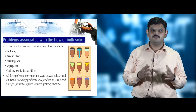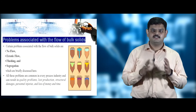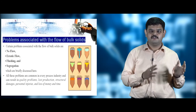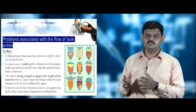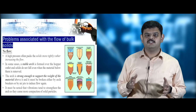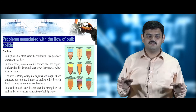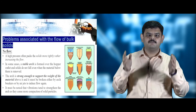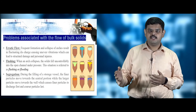Next we will see the different types of flow problems associated with flow patterns. These include no flow, erratic flow, flushing, and segregated flow. Whenever these problems occur, there are safety and quality control issues. In the no-flow condition, different arches form inside the container. These arches support the entire mass and prevent particles from flowing out.